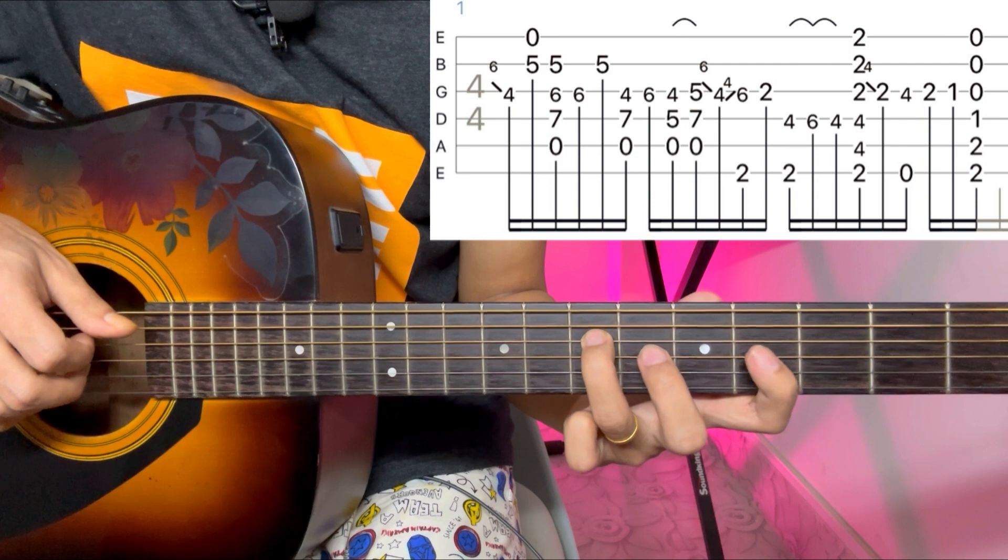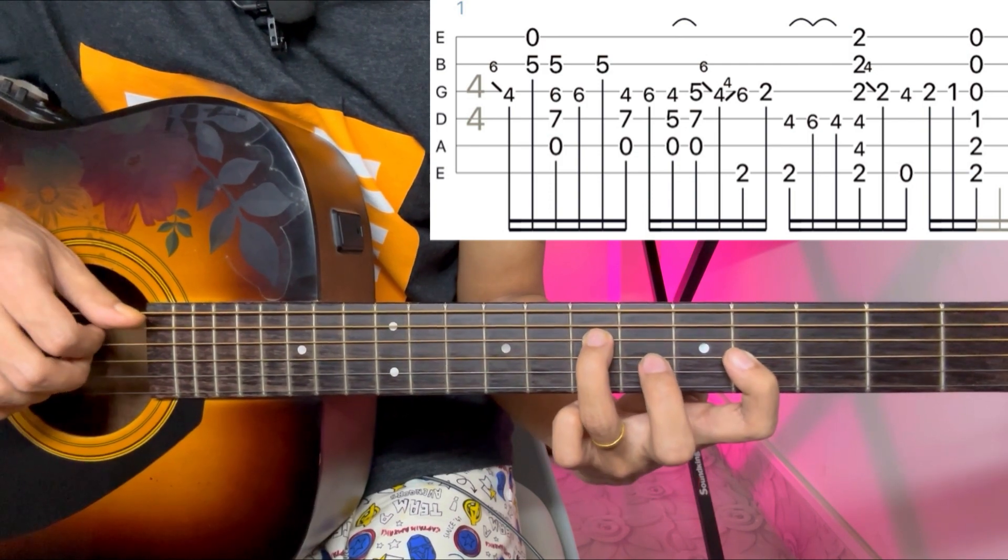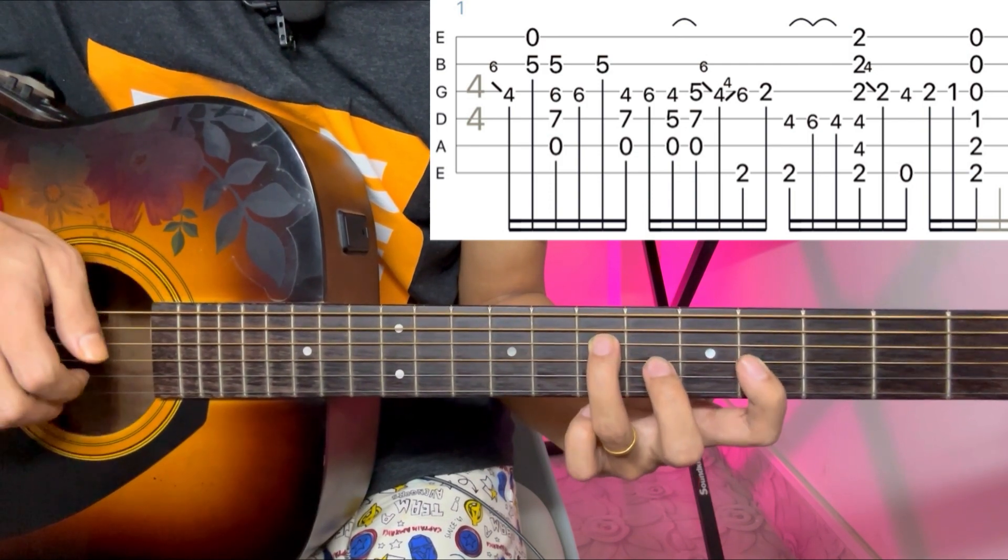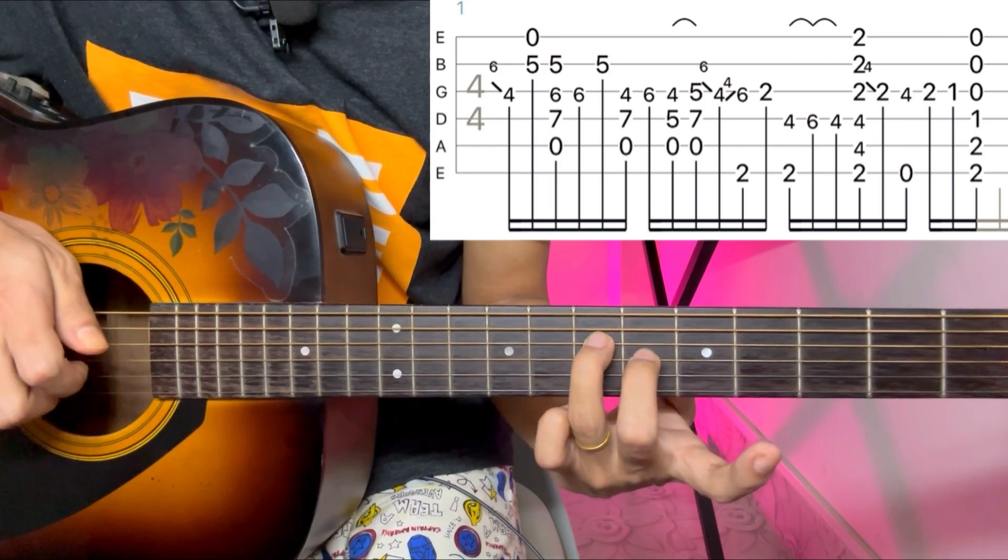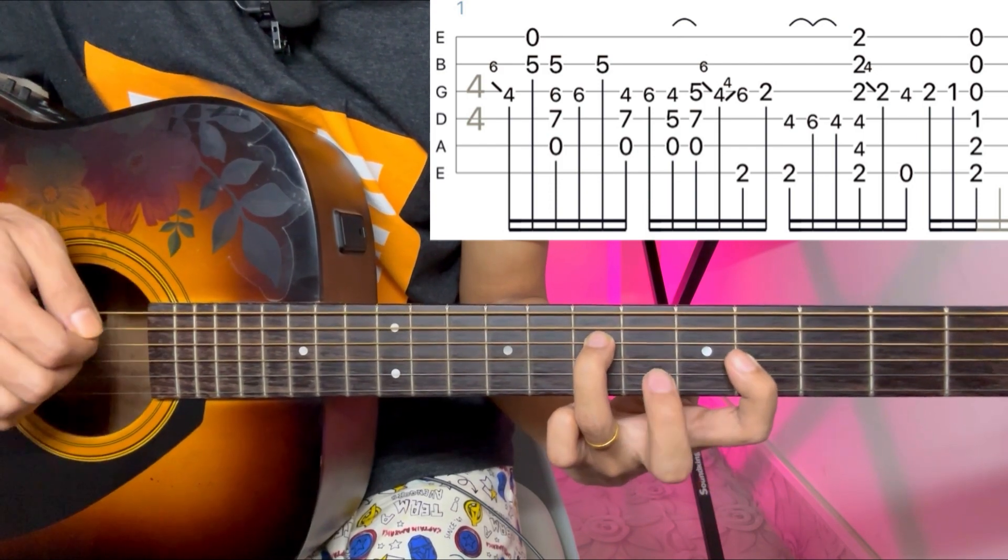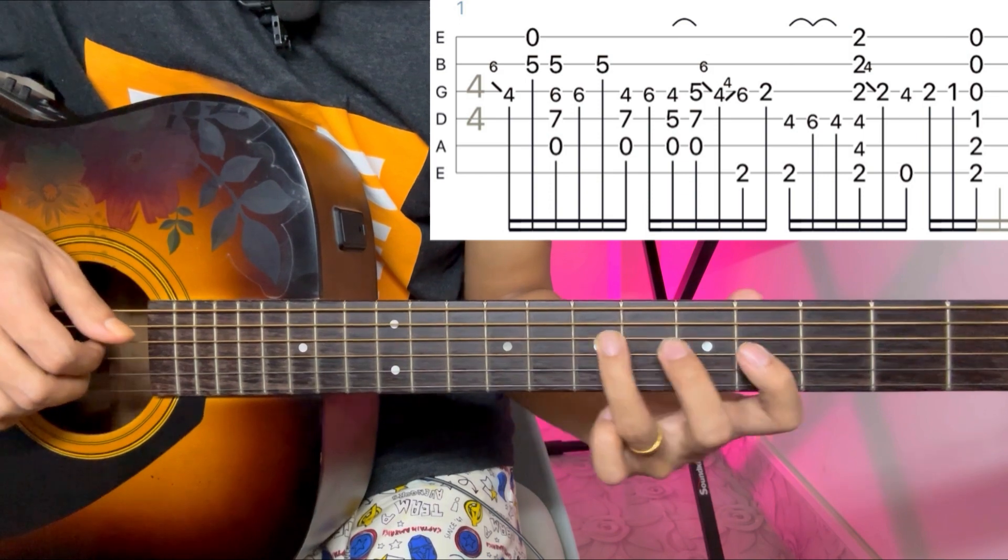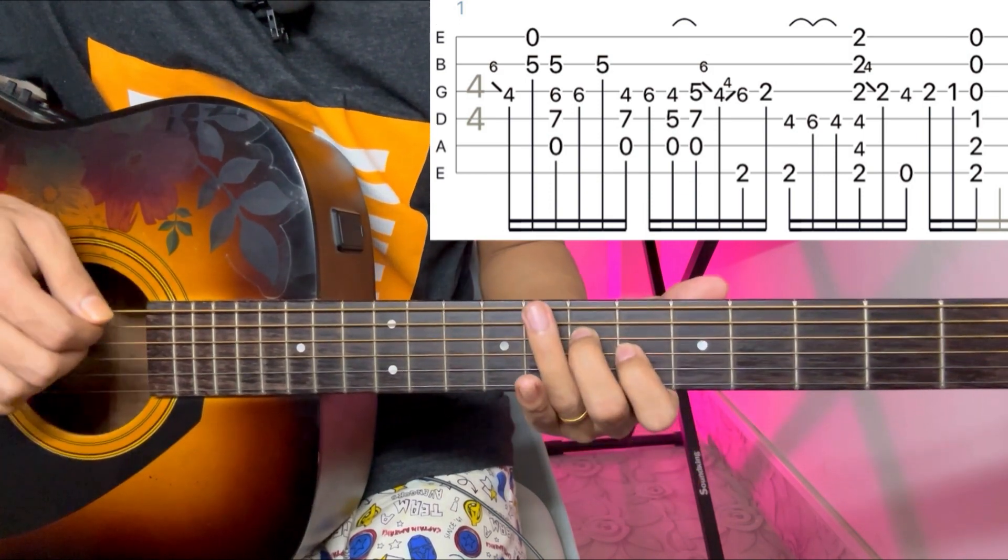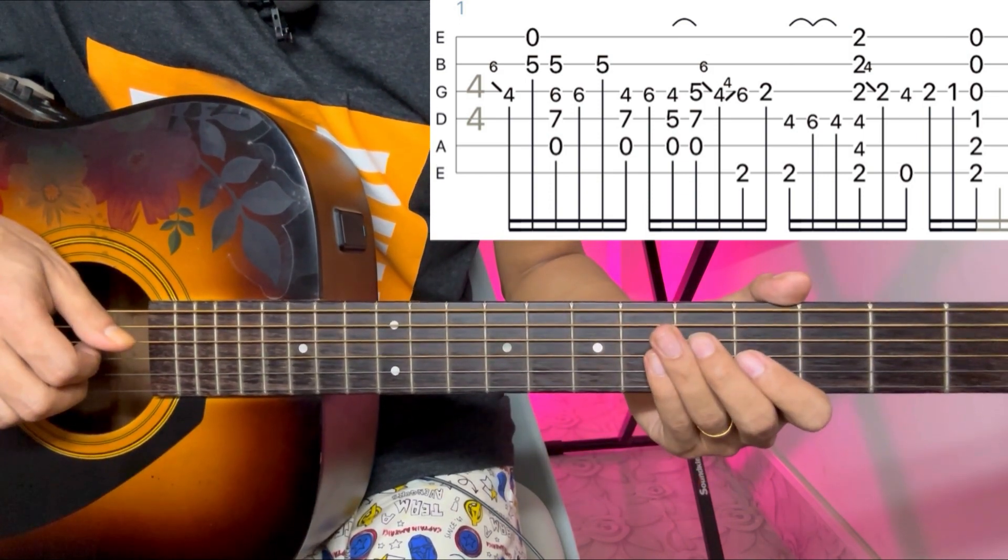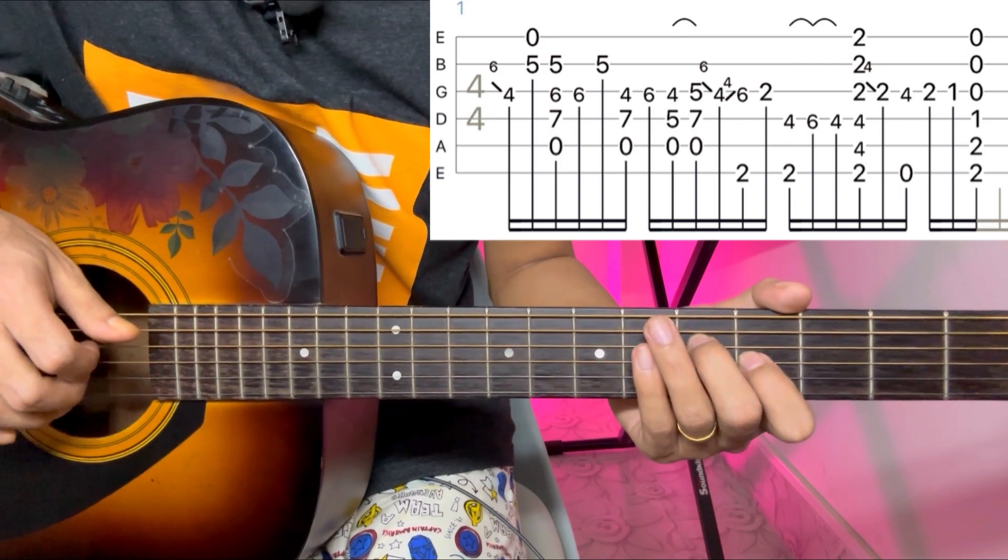4th string 7, 3rd string 4, 5th string single strum, 3rd string 6. What do you do? 5th string 5, 3rd string 4 sliding.